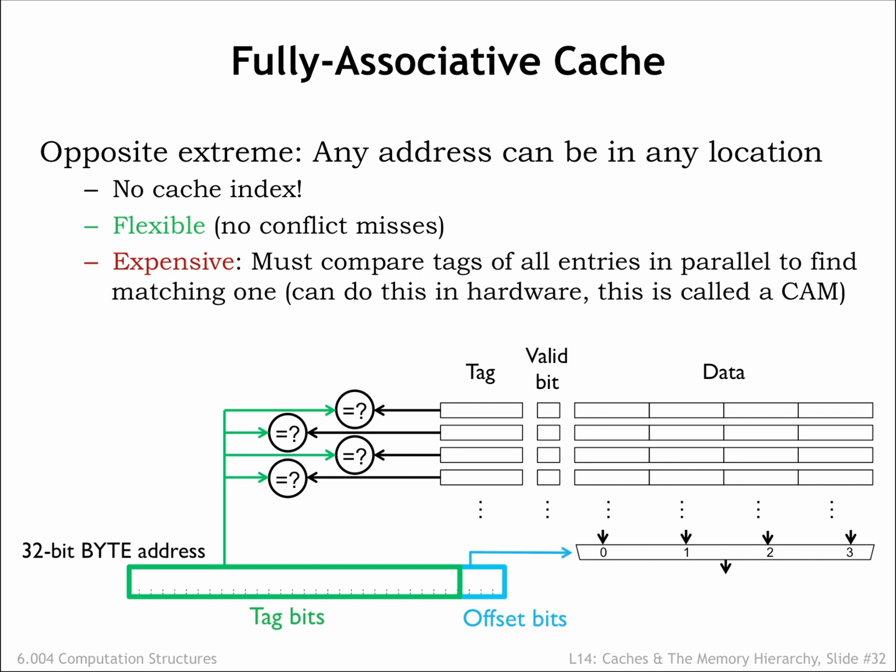The cache line shown here can hold four different 4-word blocks, regardless of their address. The example from the end of the previous segment required a cache that could hold two 3-word blocks, one for the instructions in the loop and one for the data words. This fully associative cache would use two of its cache lines to perform that task and achieve a 100% hit ratio regardless of the addresses of the instruction and data blocks.